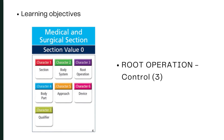At the end of this learning session, we will have a better understanding of coding the root operation Control from the eighth group of root operations. There are a total of nine groups of root operations, and we are talking about the eighth group now. We will also look at an example of coding from the Medical and Surgical section. Remember, the Medical and Surgical section is the most important and the largest section in ICD-10-PCS — if you can master this, coding for the other sections is pretty easy.